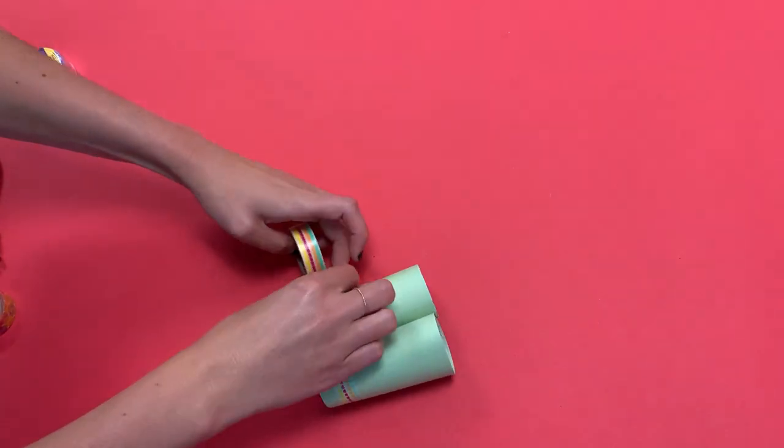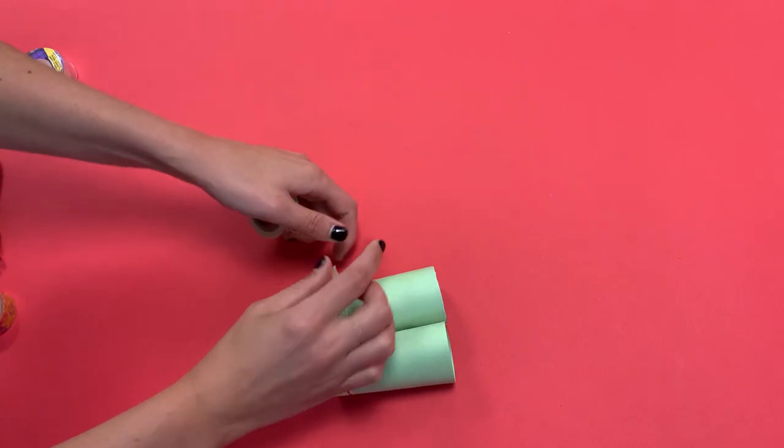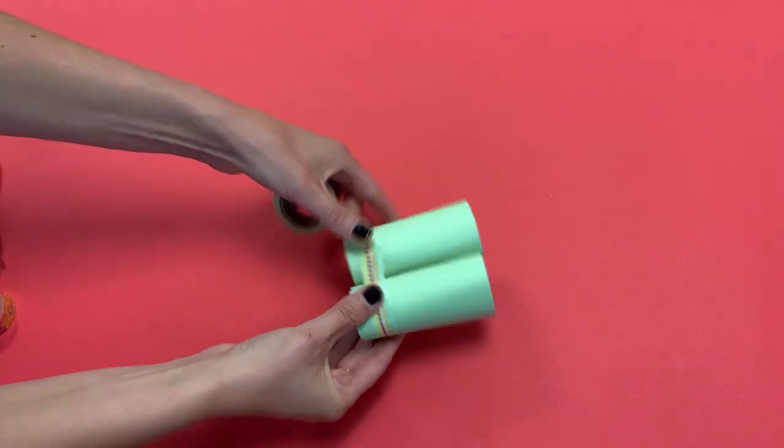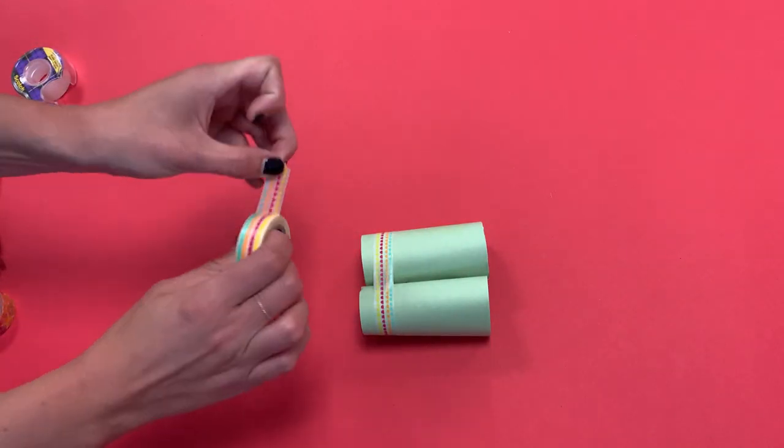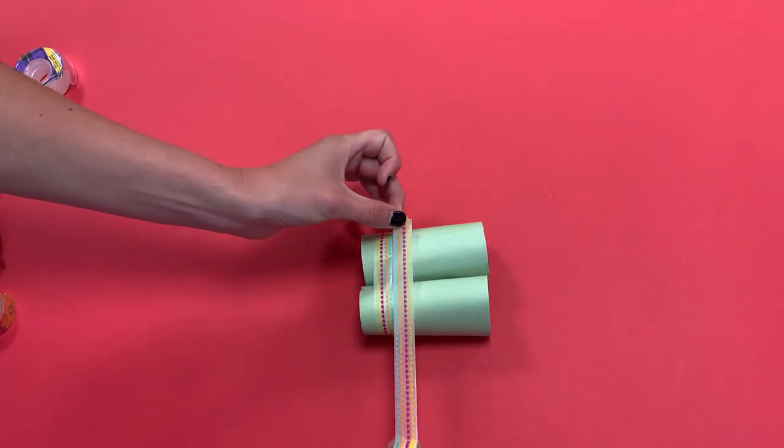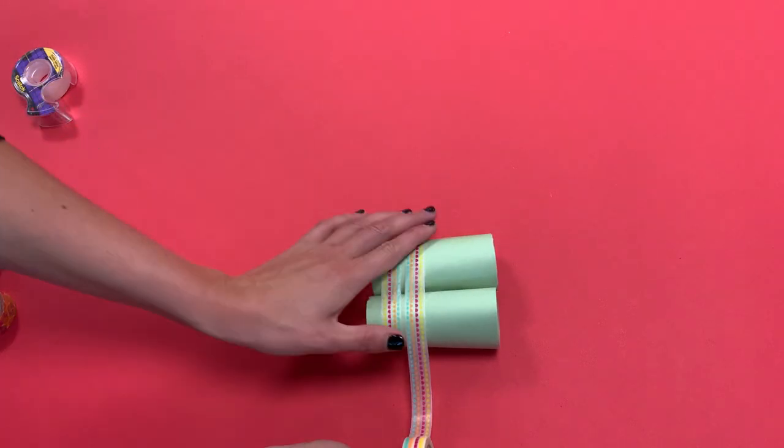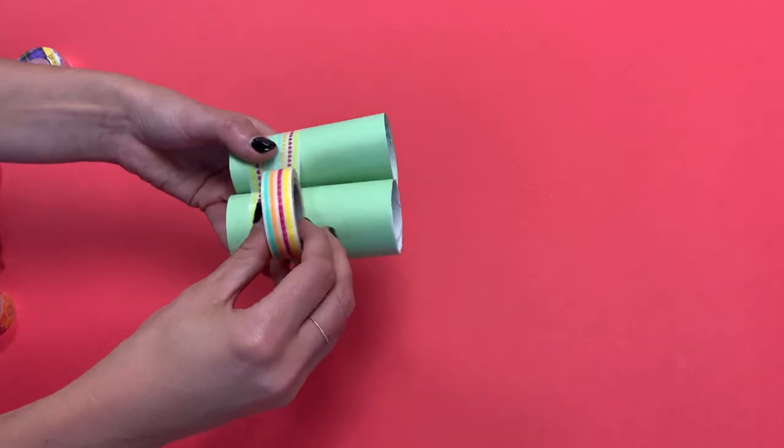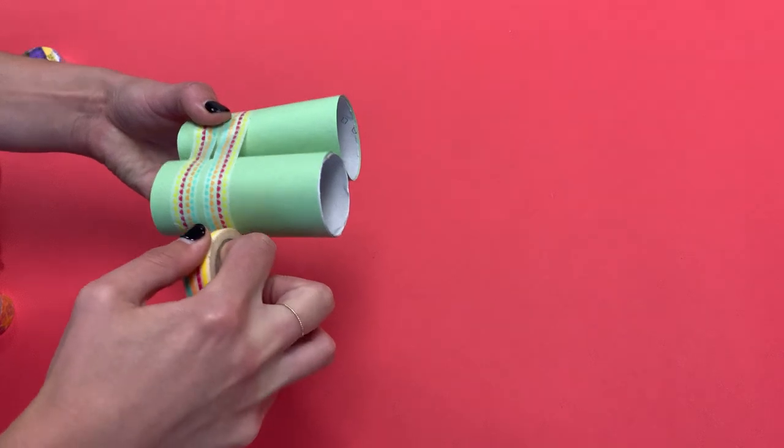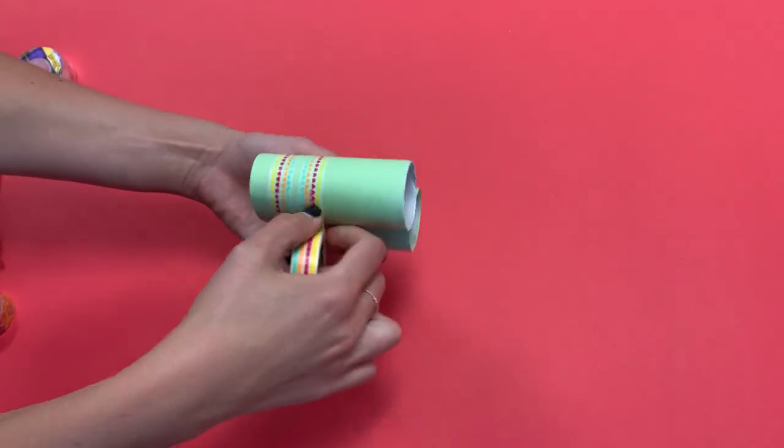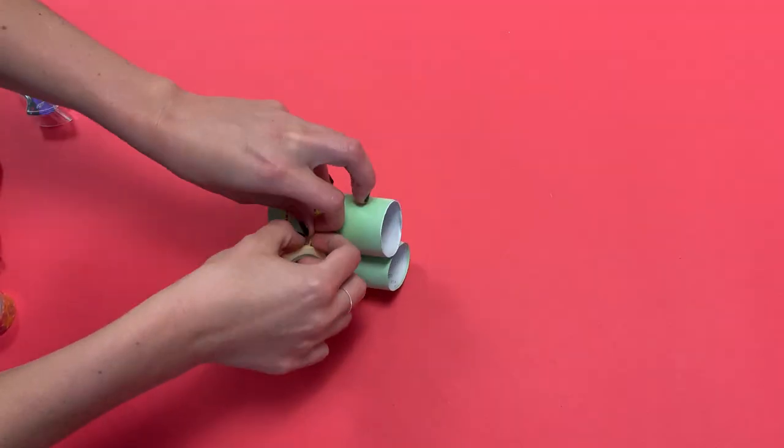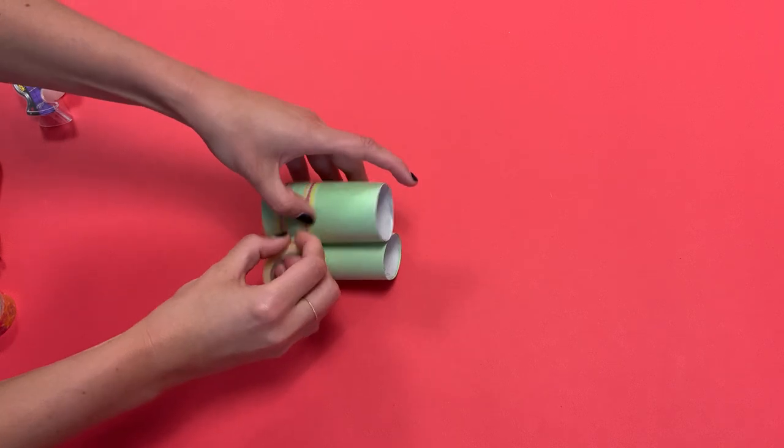Washi tape is really great. It's super forgiving. It's super easy to rip too. It's almost like paper. So I've got one strip there and I'll do the other strip just a little bit slightly above that other one. So I'll have a little gap between them. And meet it at the back. Rip it off. Perfect.